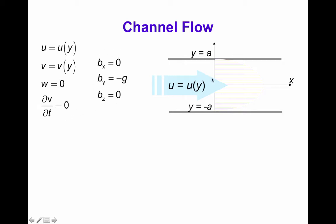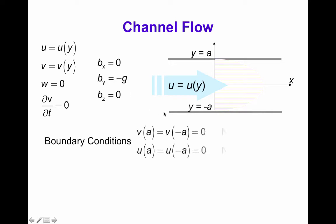The only body force is weight; if the channel is horizontal with y as the vertical direction, the only body force component is b_y equals minus g. The boundary conditions are that v equals zero at y equals plus and minus a, since these are solid boundaries. By the no-slip condition — an empirical observation in fluid mechanics — the x-component of velocity u is also zero at the boundaries, so u(±a) = 0.